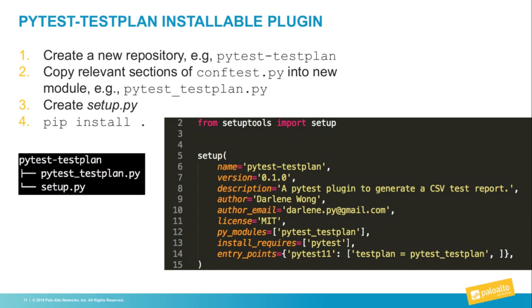If you wanted to use this in another repository, you could copy that section of conftest out, or create an installable plugin by creating a new repository, copying the relevant sections of conftest.py into a new module, and creating a setup.py so you can do a pip install. Here's what the setup.py looks like — most of it is boilerplate, but at the end you set up your entry point into the pytest test-plan module.